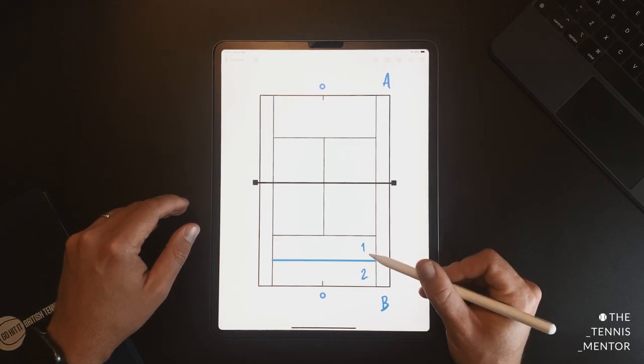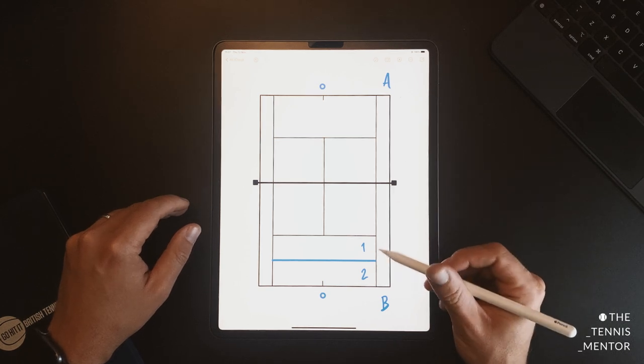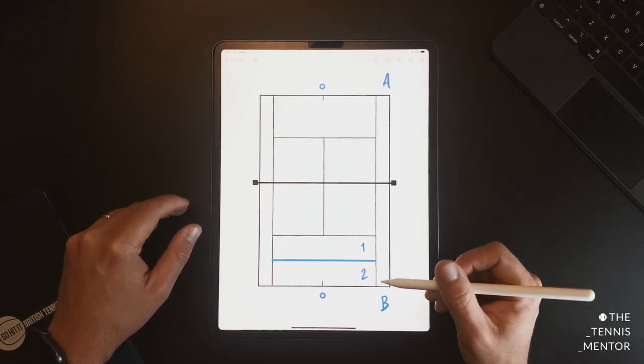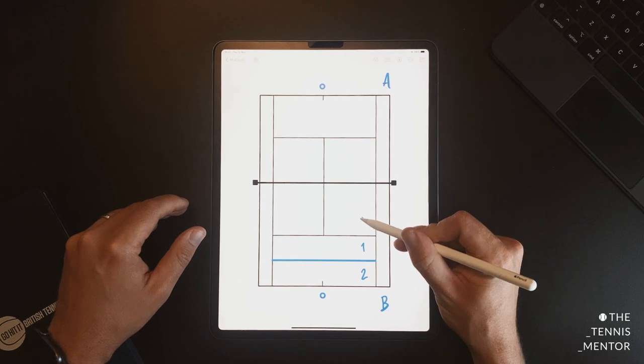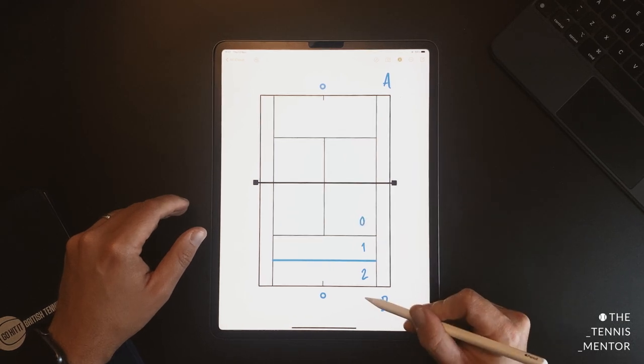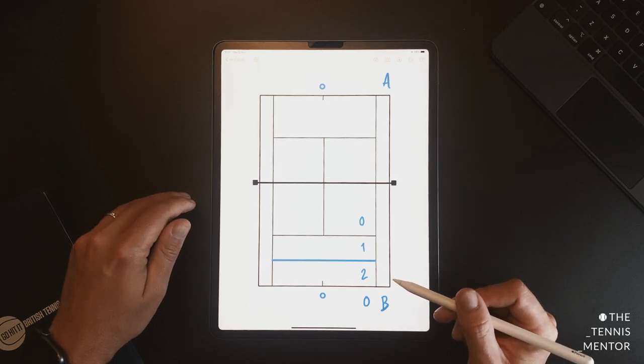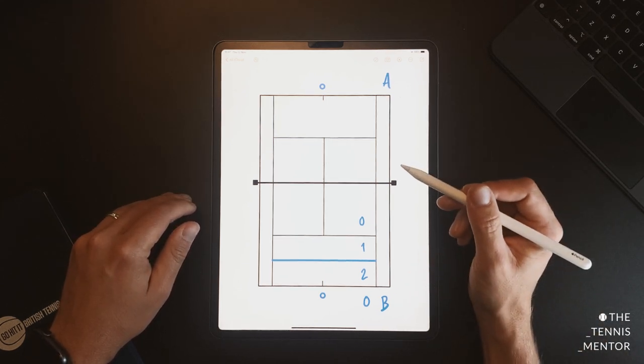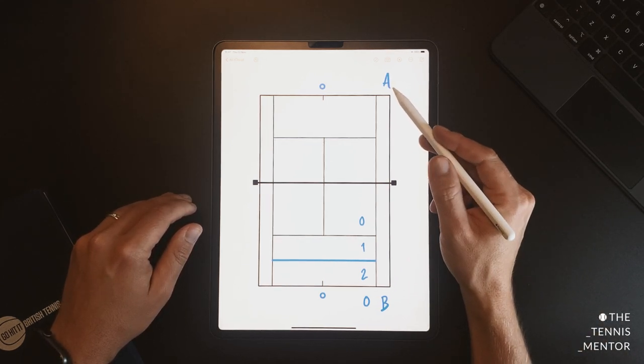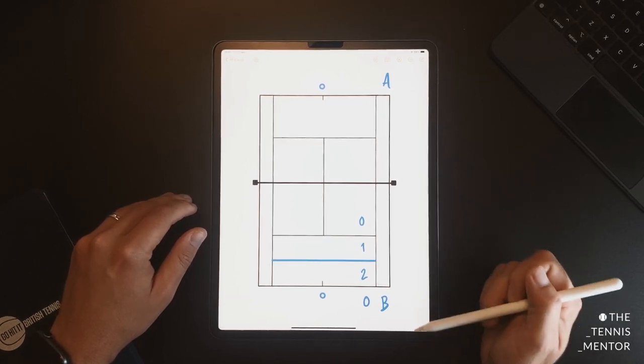Anything that lands in zone 1 is one point. Anything that lands in zone 2 is worth two points. If a ball lands short in the service boxes, or if it lands deep outside of the court, then you get zero points. After two minutes, we're going to see how many shots or how many points player A scored.